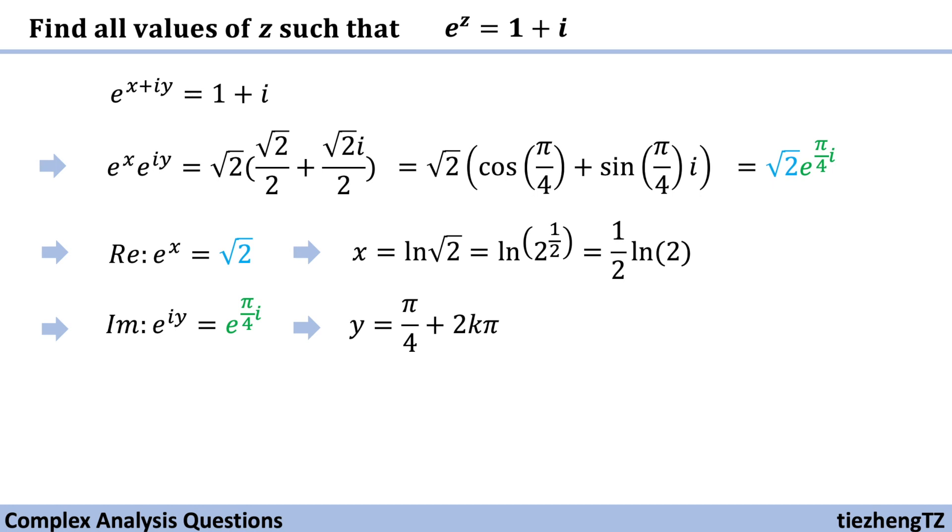So now we know x and y. We just need to substitute them back. So z is x plus iy equals 1 over 2 times ln 2 plus i times pi over 4 plus 2k pi, where k is equal to 0 plus minus 1 plus minus 2, etc.